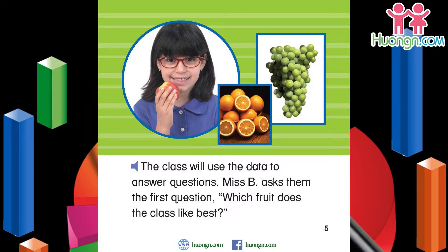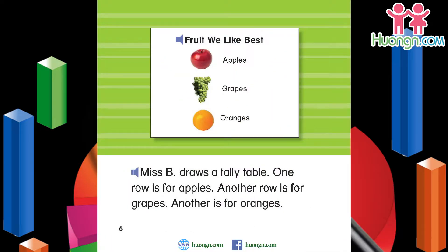Miss B asks them the first question: which fruit does the class like best? Miss B draws a tally table. One row is for apples, another row is for grapes, and another is for oranges.